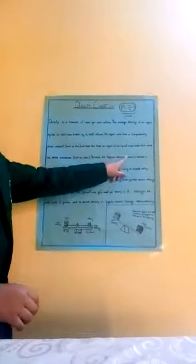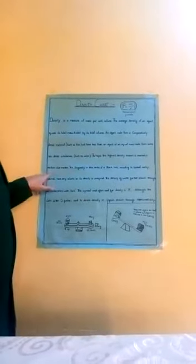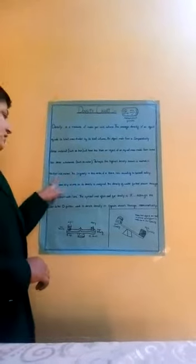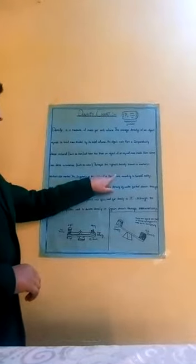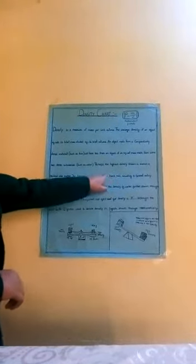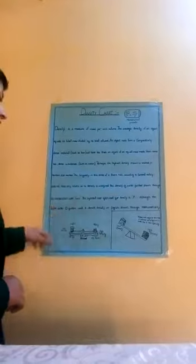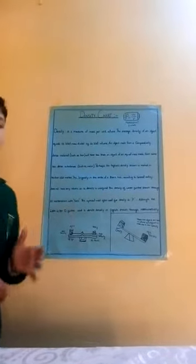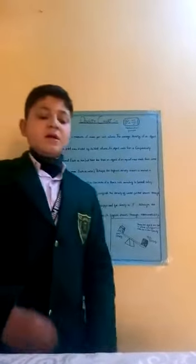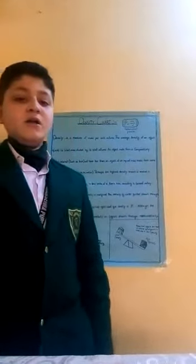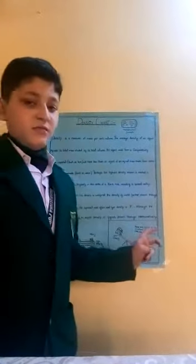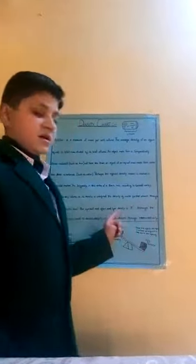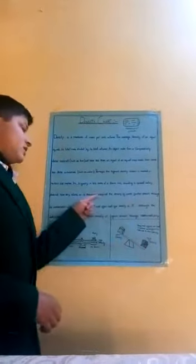Perhaps the highest density known is found in neutron star material. It is also found at the center of a black hole in the galaxy. It does not have volume but its mass is very high, which is why it has the world's highest density — though that density is technically undefined.